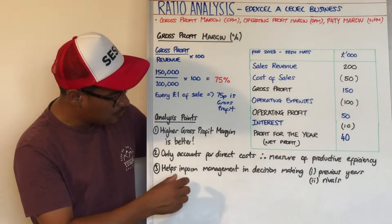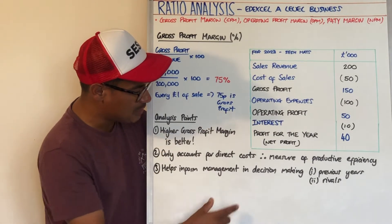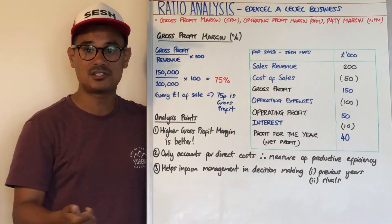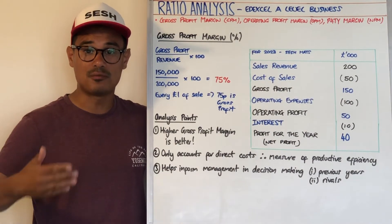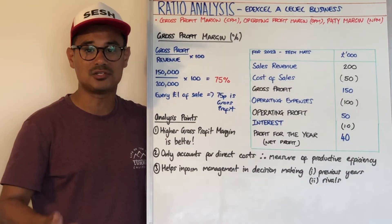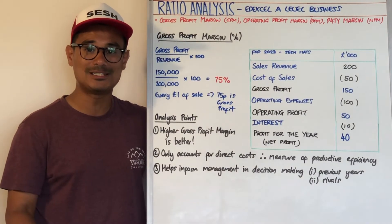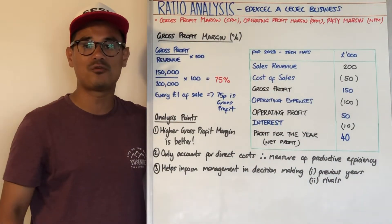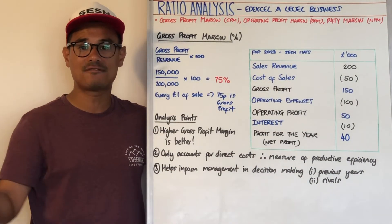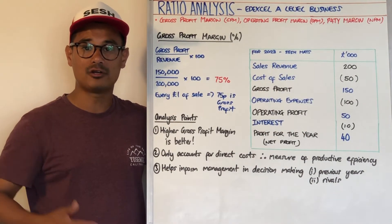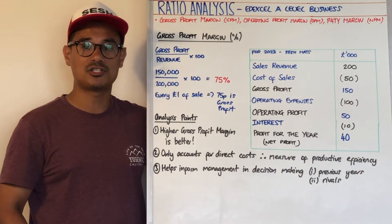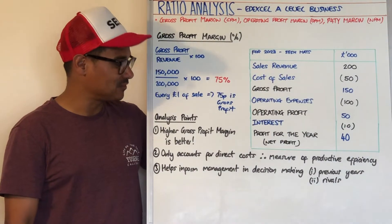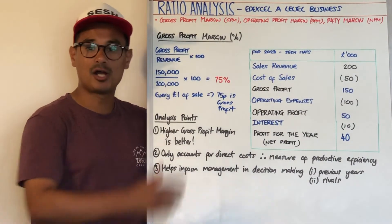Another analysis point is that GPM helps inform management and stakeholders in their decision-making process. They might want to compare to previous years to see if the gross profit margin has improved or worsened. If it has worsened, they might want to put strategies in place to improve it. They might also compare to rivals within the same industry to see if they are above or below average, and again use that to inform strategies to maintain or improve their GPM.